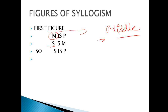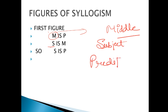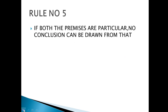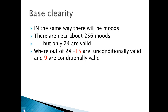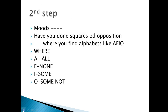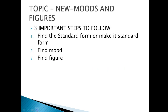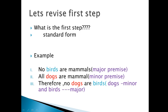S bolte hain subject ko aur P bolte hain predicate ko. Is cheez ko samjhein — predicate ko. Ab yahan se hum chalte hain apni first wali slide par. Yahan dekho is wali example se, ab hum dekhenge aapka M kya hai, P kya hai.